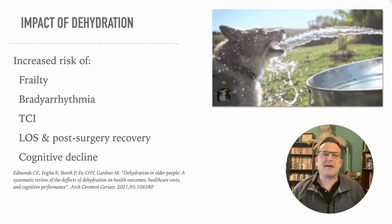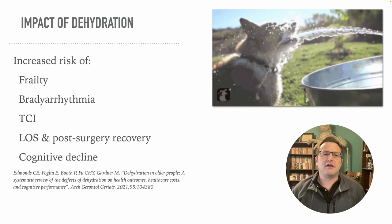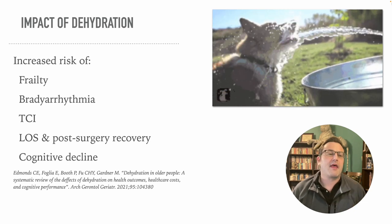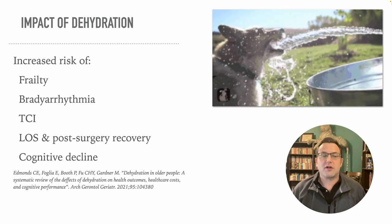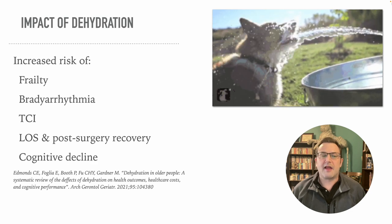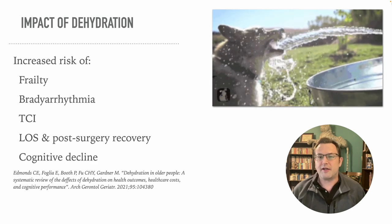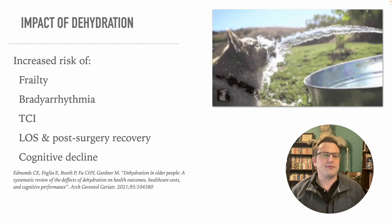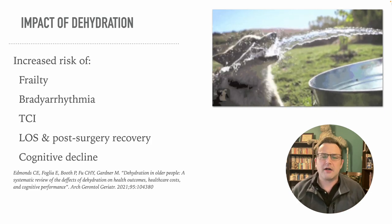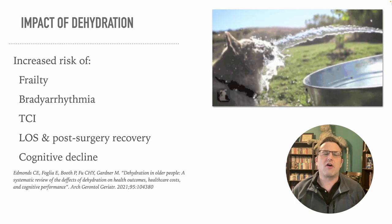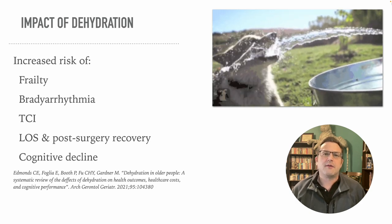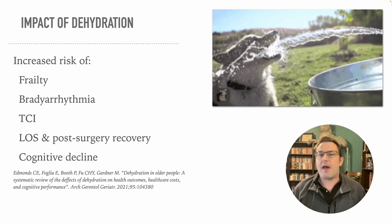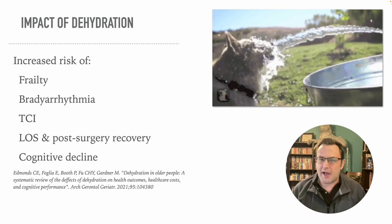What are the impacts of being dehydrated? Dehydration in the elderly increases the risk of frailty. It's associated with bradyarrhythmia, stroke, and is positively correlated to length of stay and post-surgery recovery time, and negatively associated with outcomes — meaning dehydration leads to poor outcomes. It's also associated with cognitive decline, enough that some suggestions have been made that patients displaying mild dementia symptoms may just be dehydrated and the best first step would be to try to hydrate them.